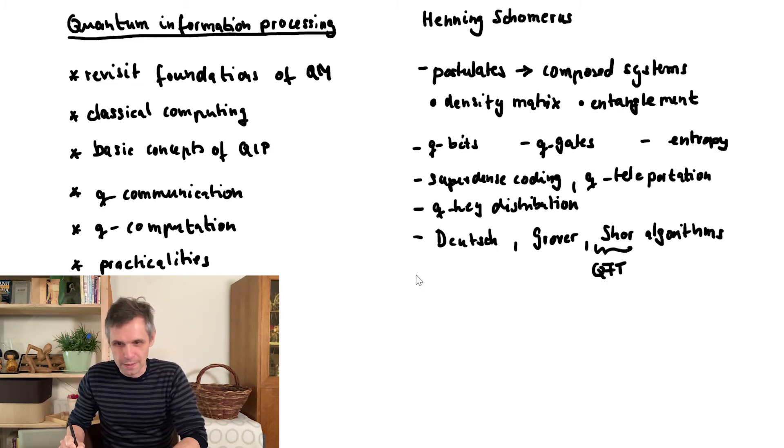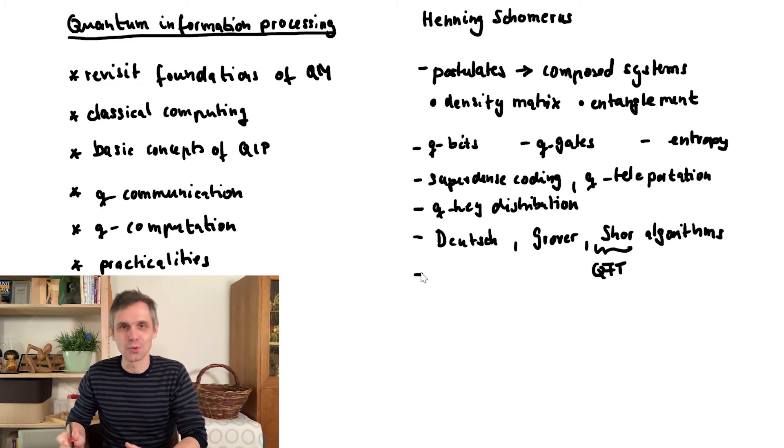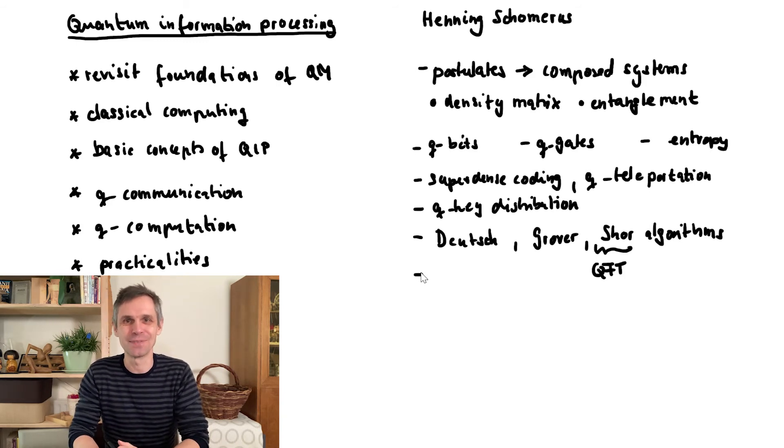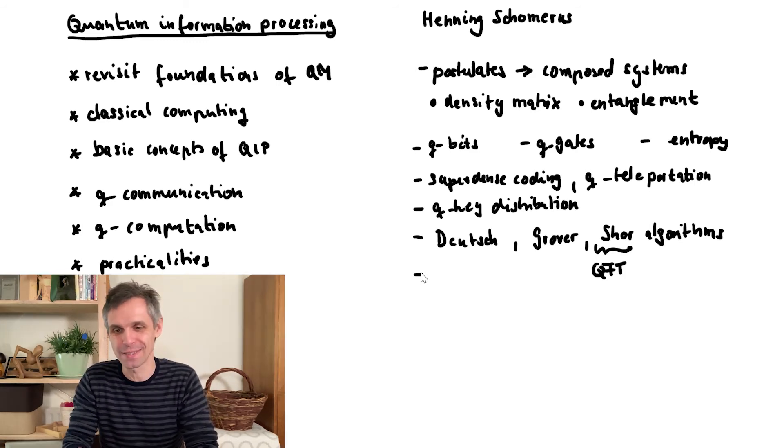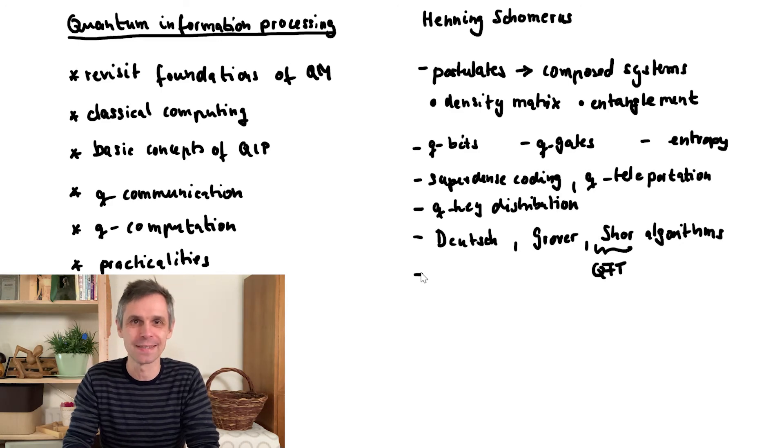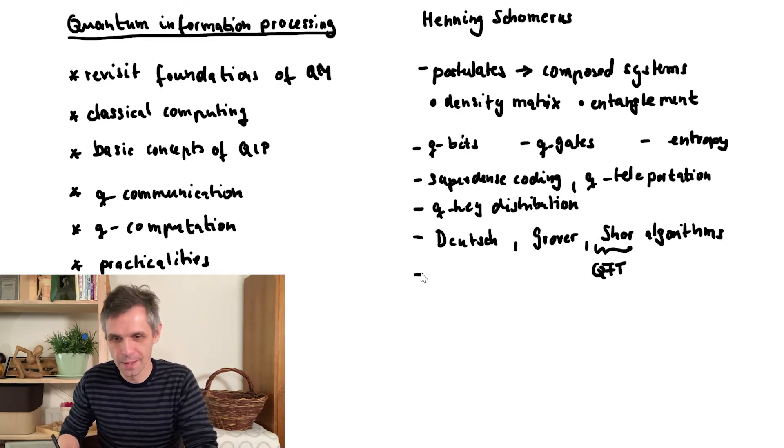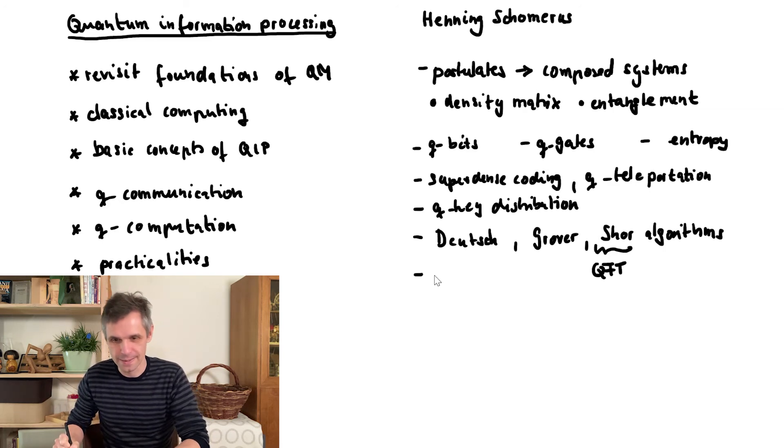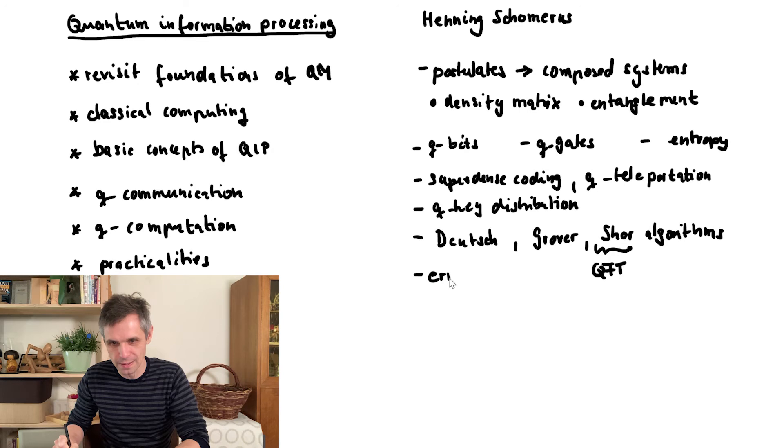When we then move on to the practical issues, we are going to look at some errors in quantum systems. So actually, what can actually go wrong in a quantum computer is a little bit more intriguing than in a classical computer. First of all, we will have to understand the nature of errors in quantum computers, and then also how we can correct them. So we are going to look at error correction.